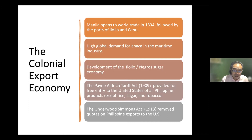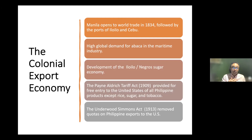The colonial export economy extended well into the American occupation period. Two laws enacted by the U.S. Congress paved the way for massive growth of agricultural exports with the United States as an exclusive trading partner. The Payne-Aldrich Tariff Act of 1909 provided free entry to the United States of all Filipino products except rice, sugar, and tobacco. That was followed in 1913 by the Underwood-Simmons Act, which removed all quotas on Philippine exports to the United States, and likewise for Philippine imports from the United States. By 1939, 85% of all exports from the Philippines were going to the United States.